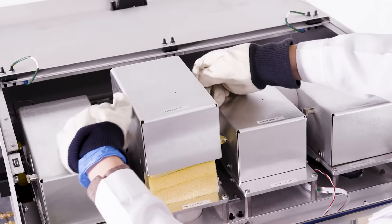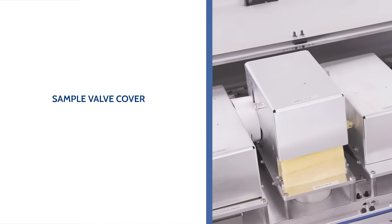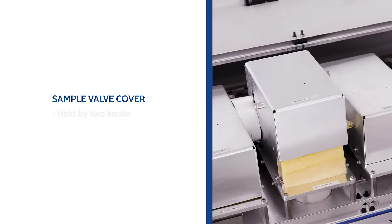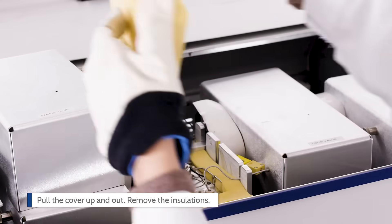Remove the sample valve cover, which is the second cover from the left. The sample valve cover is held in place by two knobs. Remove the cover by pulling the knobs outward until the cover is released. Pull the cover up and out. Remove the insulation.